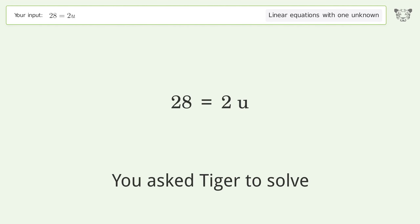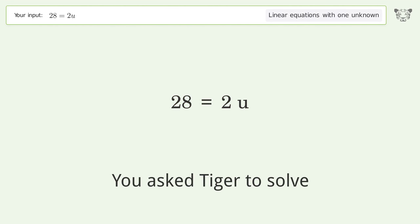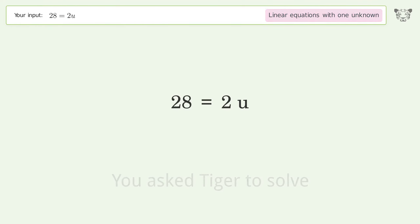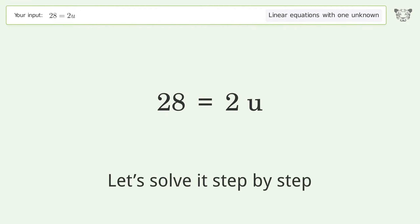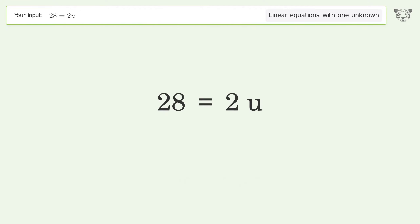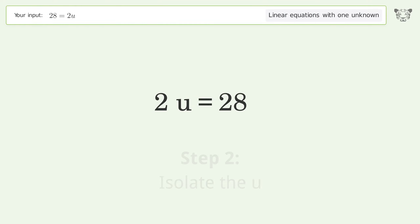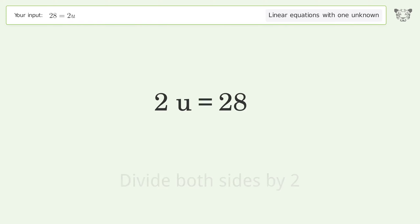Tiger Algebra solves 28=2u, a linear equation with one unknown. The final result is u equals 14. Let's solve it step by step: swap sides, isolate the u, and divide both sides by two.